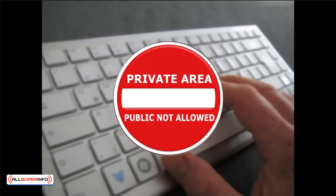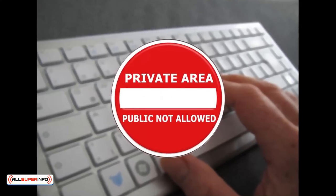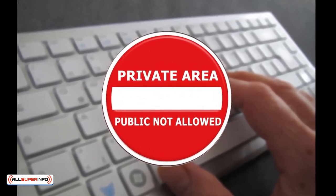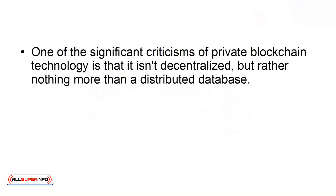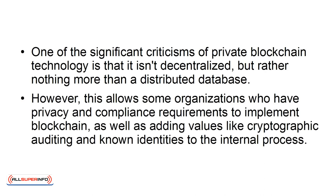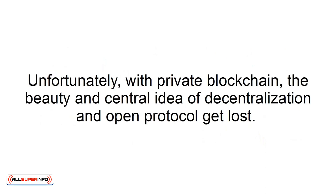Private Blockchain. All permissions are kept centralized to an organization with private blockchain technology. This is the kind of blockchain that companies used when they wanted to create their own currencies. One of the significant criticisms of private blockchain technology is that it isn't decentralized, but rather nothing more than a distributed database. However, this allows some organizations to have privacy and compliance requirements to implement blockchain, as well as adding values like cryptographic auditing and known identities to the internal process. Unfortunately, with private blockchain, the beauty and central idea of decentralization and open protocol get lost.